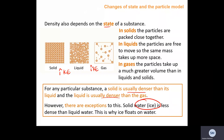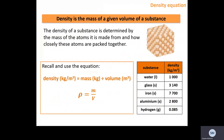The exception to this is solid water — ice is less dense than liquid water, which is why ice floats on water. This happens because water forms a crystal lattice structure. Density is the mass of a given volume of a substance. The density of a substance is determined by the mass of the atoms it is made from and how closely those atoms are packed together.